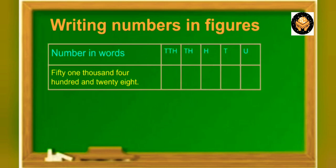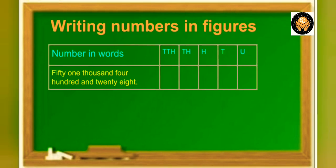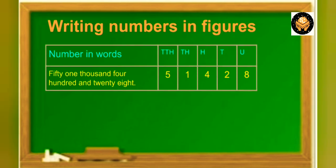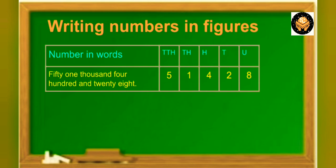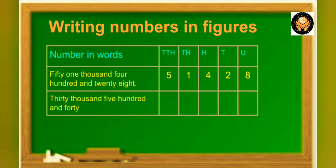Now let's see how to write numbers in figures. When writing numbers in figures, write the digit in the highest place first and then in each of the next smaller places. Write 0 if there is no digit in that place. For example, 51,428: there are 51,000, so write 5 in the 10,000 place and 1 in the 1000 place. As there are 400, write 4 in the 100 place. And 28 means 2 tens and 8 units, so write 2 in the tens place and 8 in the unit place.